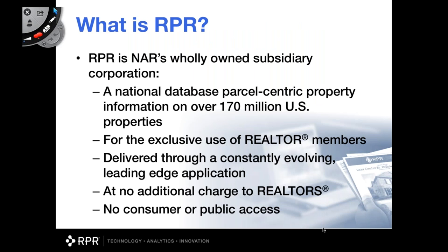What is RPR? That's a question a lot of people ask me all the time — is this a national MLS, or what in the world is RPR? RPR is basically a big database. It's got tons of properties in it — over 170 million. We call this parcel-centric property information, which means we're aggregating data that is available publicly on the internet, so that we can have it in one central location. Because it's gathering and aggregating data from all over the worldwide web into one database, we can actually use big data and develop algorithms to predict what a property might sell for — similar to a Zestimate, like what Zillow does.